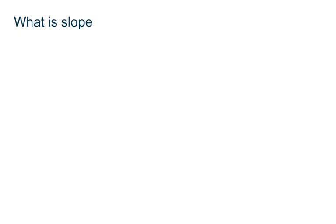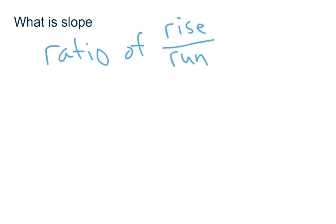So first of all let's talk about what slope is. Slope is a ratio of two things happening on a graph — it is the ratio of rise over run. That means how far a line is going up or down versus how far it's going left or right.